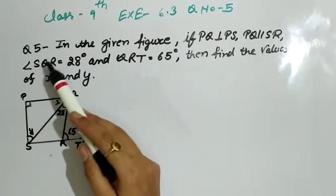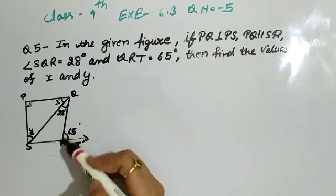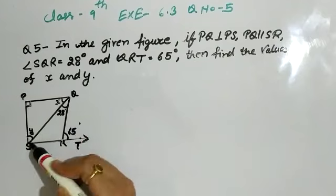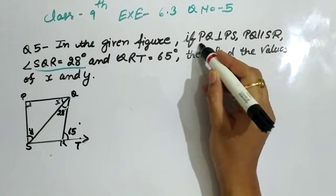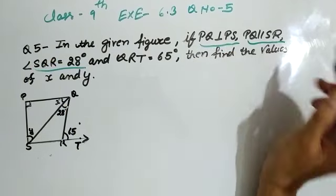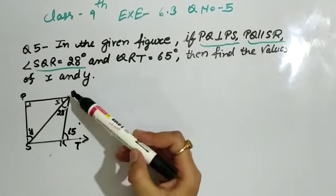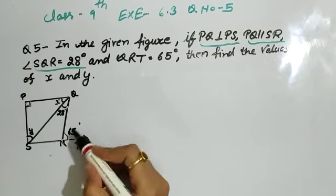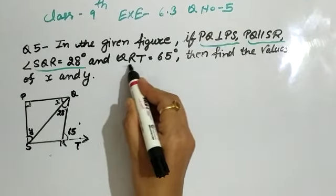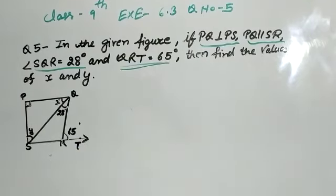Angle SQR is 28 degrees — that is given to you. Angle QRT is 65 degrees — that angle is also given. You need to find the values of X and Y.